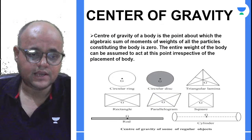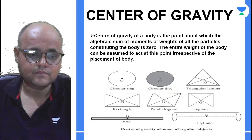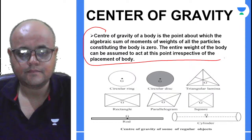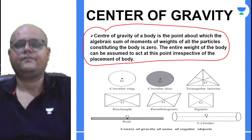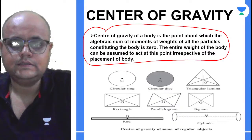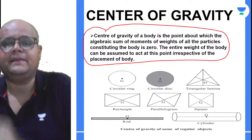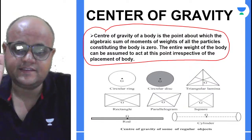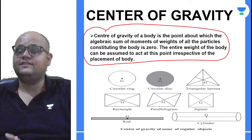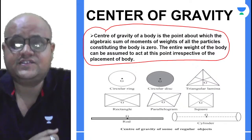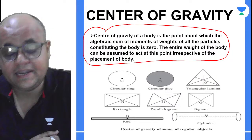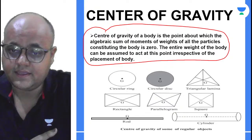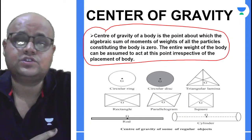Now just read the definition and you'll be able to crack it. If about that particular axis the net moment is zero, then I can assume that the entire weight of the body is concentrated at that point.